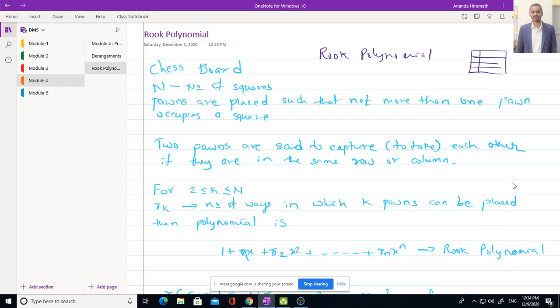Now you can imagine this Rook Polynomial in similar fashion. In chess the pawns are placed such that not more than one pawn occupies a single square. In chess also you can see you can put only one pawn. So that way we can understand this Rook Polynomial, but the condition is no two pawns can be placed on same row or same column.